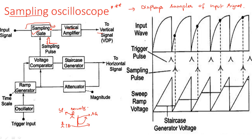In the remaining period when there is no sampling pulse, no signal goes to the vertical amplifier — the system is effectively off. So the sampling gate simply opens and closes: it opens when the sampling pulse occurs and closes otherwise. The entire remaining part of the block diagram — voltage comparator, staircase generator, oscillator, and trigger input — all work toward the generation of the sampling pulse.